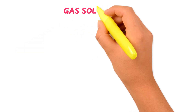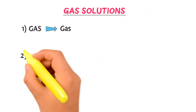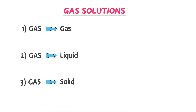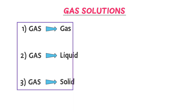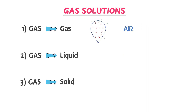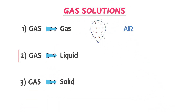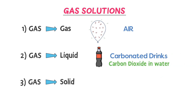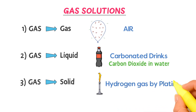Finally, let's look at the three different types of gas solutions: gas in gas, gas in liquid, and gas in solid. Gas is taken as a solute and dissolved in three different solvents. The example of a gas in gas solution is air — a homogeneous mixture of nitrogen, oxygen, noble gases, etc. The example of a gas in liquid solution is carbonated drinks, where carbon dioxide is dissolved in water. The example of a gas in solid is hydrogen gas absorbed by a platinum sheet or marshmallow.